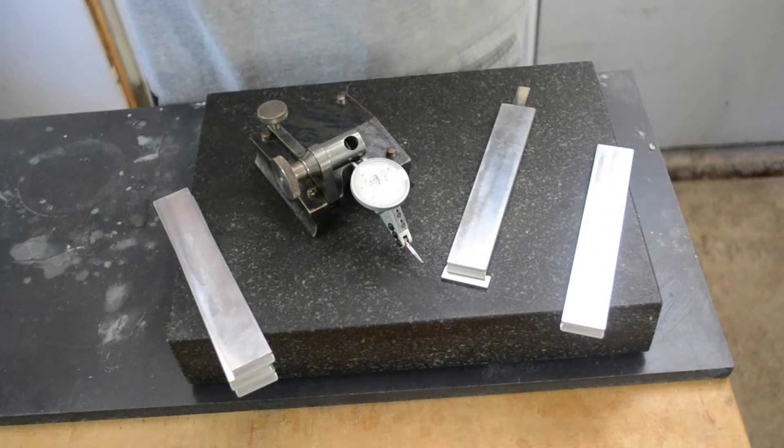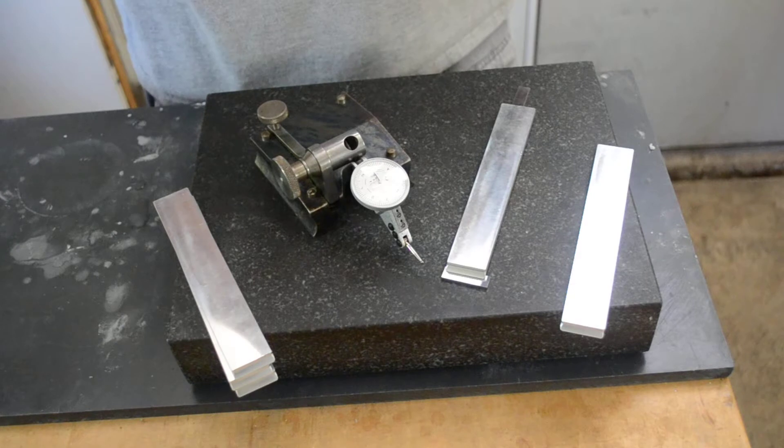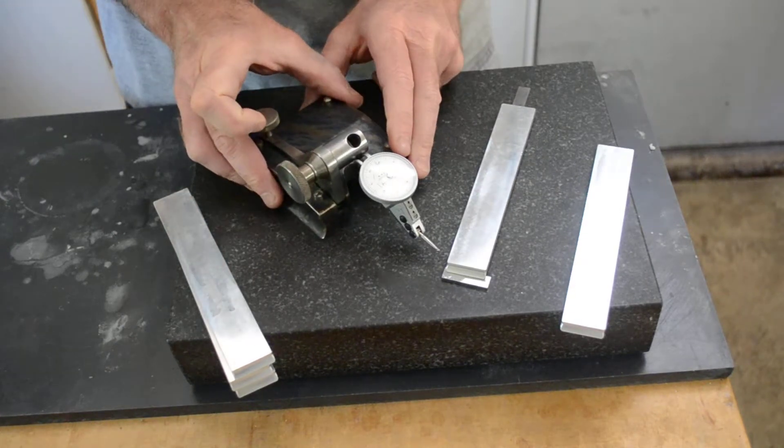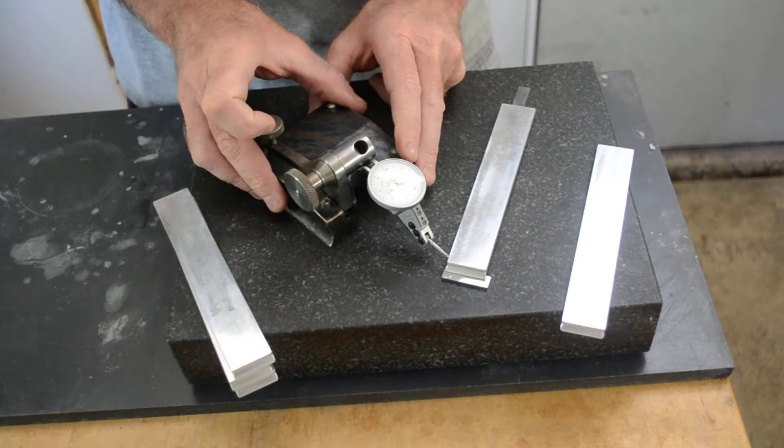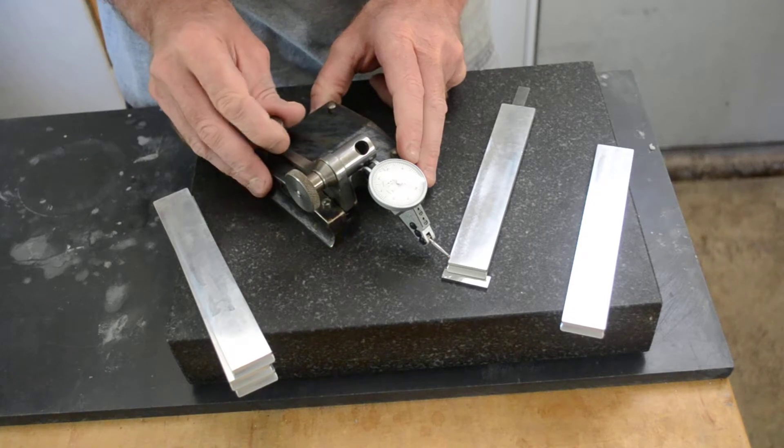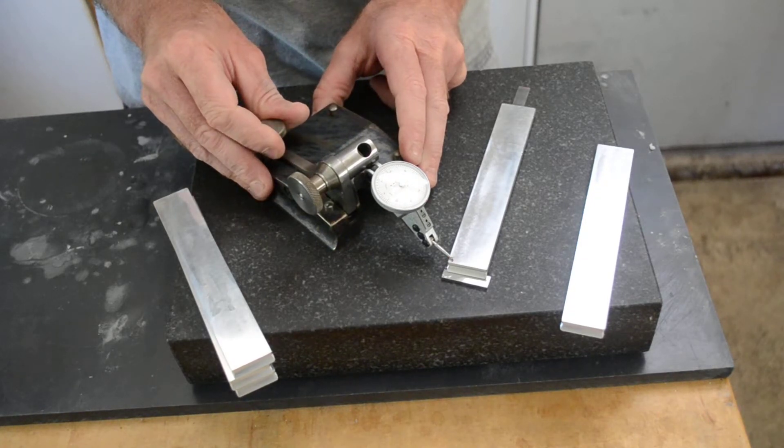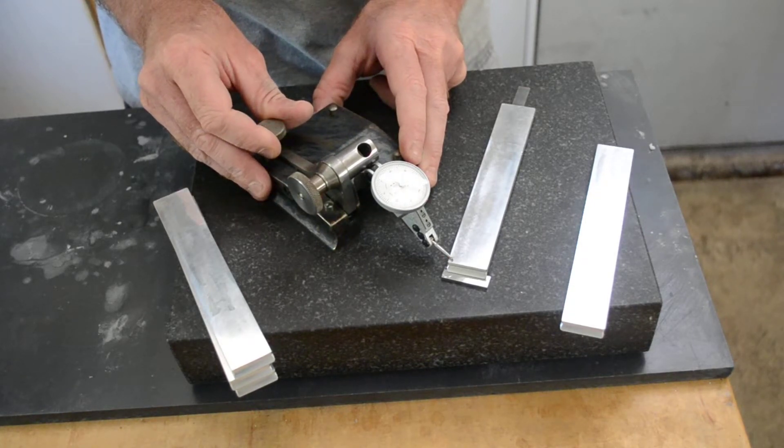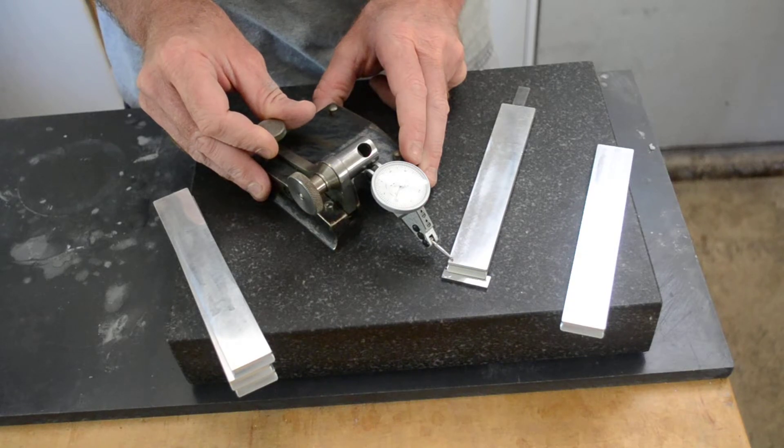If you want to get them a little flatter, probably a piece of 320, 400 wet and dry on a flat surface, and just gently lap them a little bit should do it. You're not going to have to take much off.